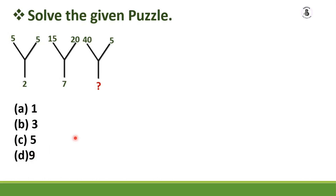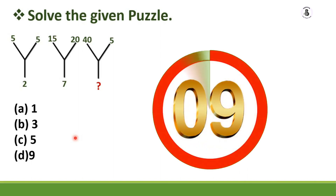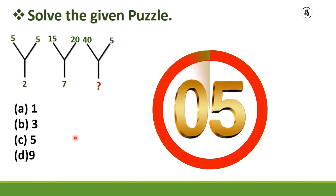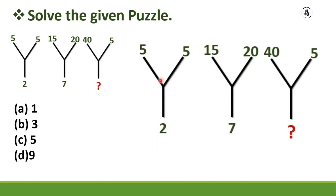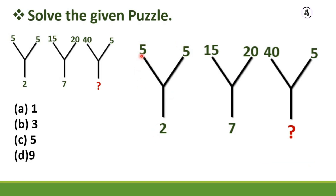First I will give 10 seconds to solve the problem. Now, to solve these problems, you have to make a relation between the digits. Take 5, 5, and 2 — you need to find some kind of pattern for each group. If I add 5 plus 5, it will be 10, and to get 2, it will be divided by 5.